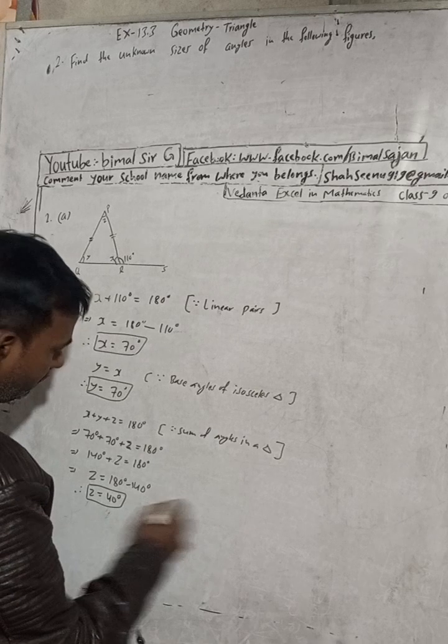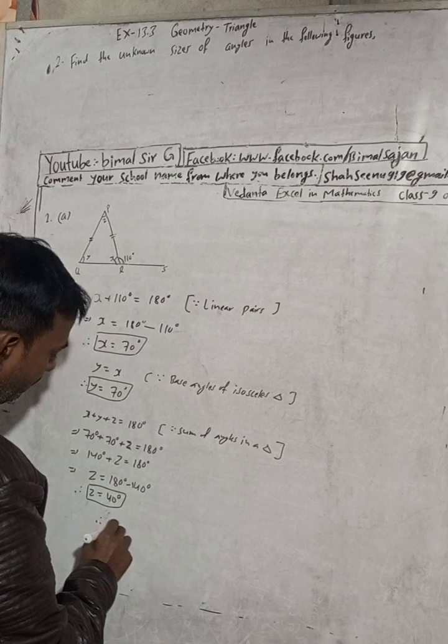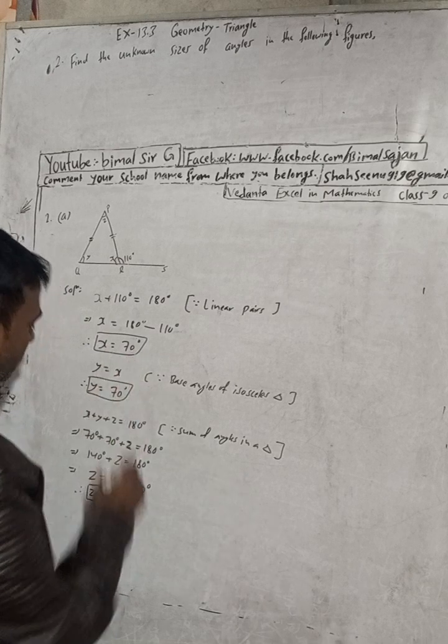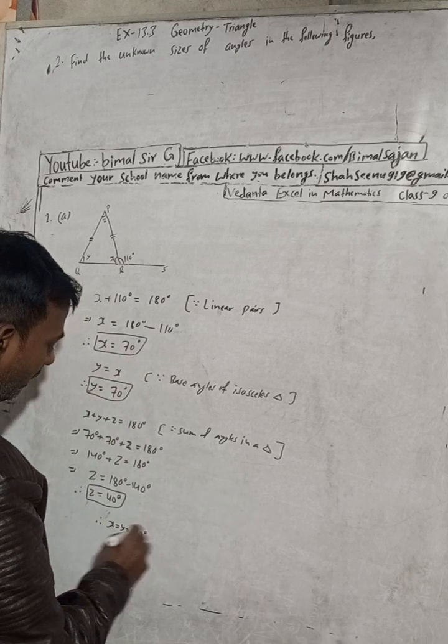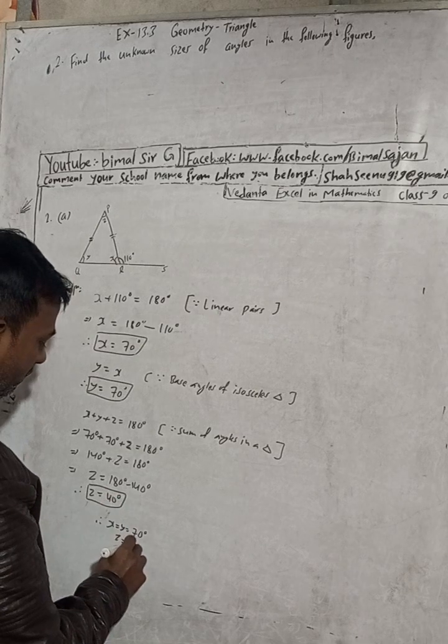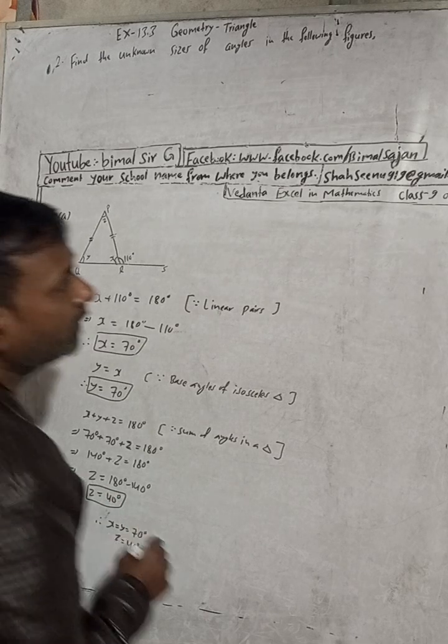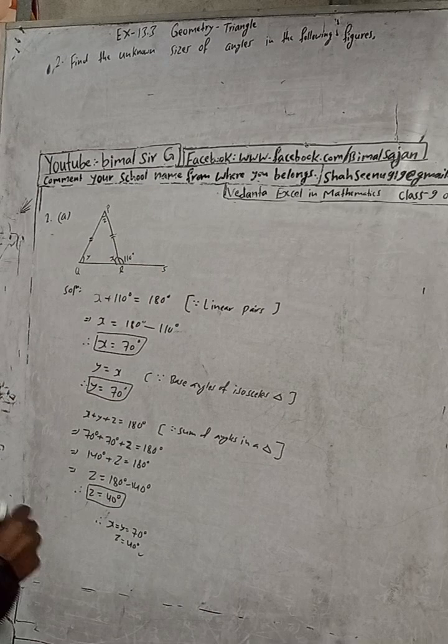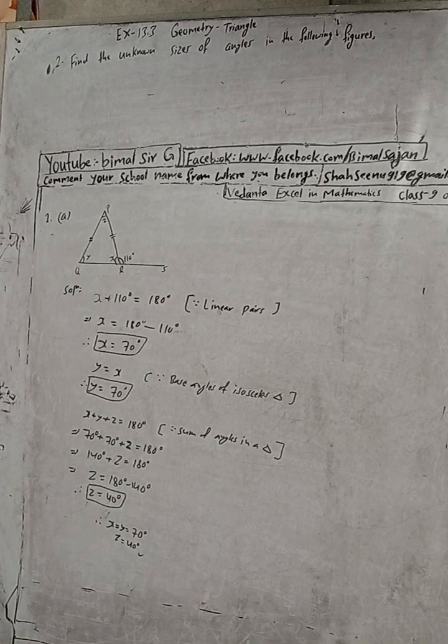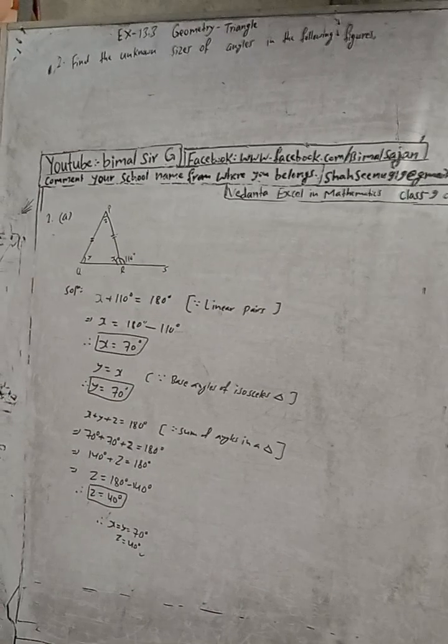That's why our three answers, you can write here, therefore x is equal to y is equal to 70 degrees, and z is equal to 40 degrees. In the book I have written 70, 70, 40, that means 70, 70, 40 degrees. So this is the solution.